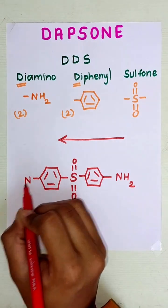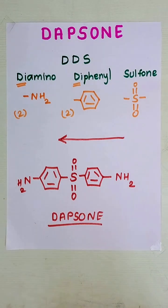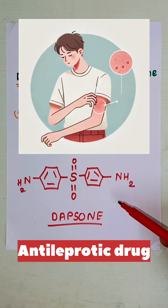Then we have diamine. One amine NH2 is at this side and another NH2 is at this side, and we got our structure dapsone. Dapsone is an anti-leprotic drug used in the treatment of leprosy.